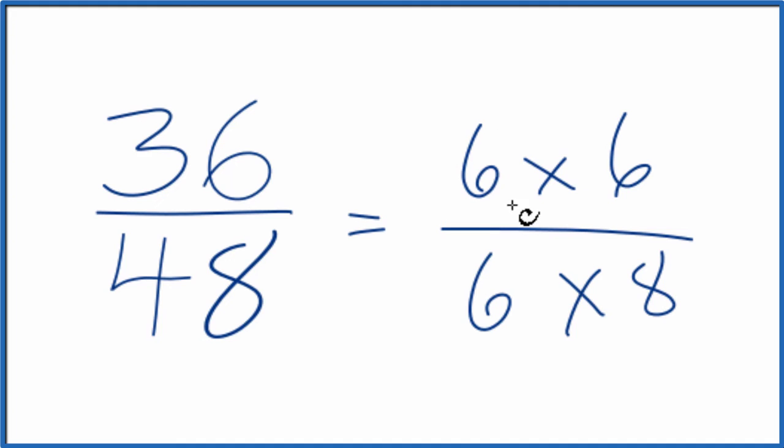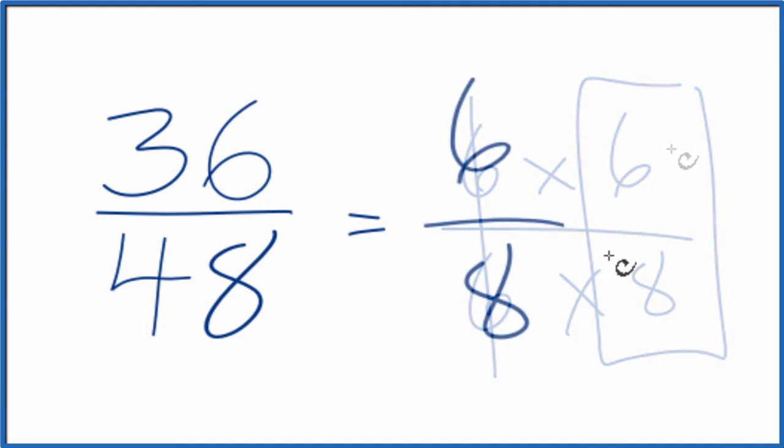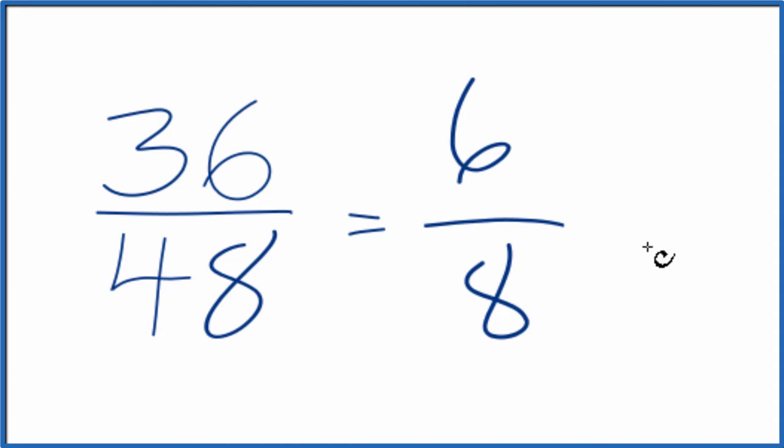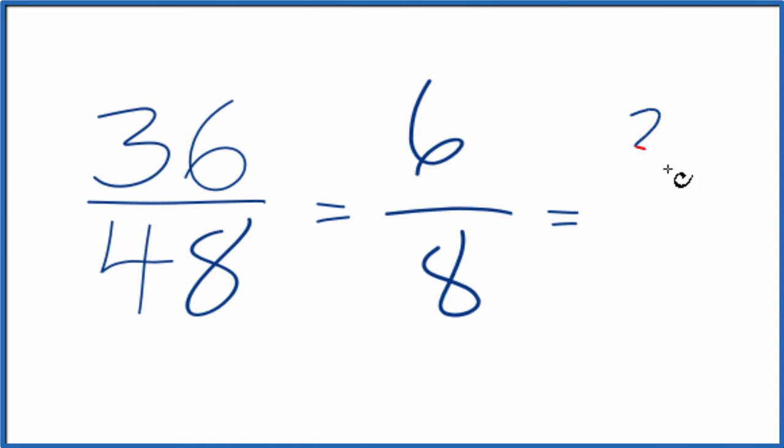Since we have 6 on the top and the bottom, we can cancel this out and end up with 6 eighths. But we can reduce 6 eighths down further. If we divide 6 by 2, that gives us 3, and 8 by 2 gives us 4.